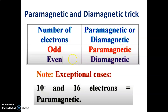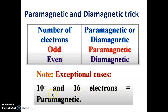So normally, even number of electrons is diamagnetic and odd number of electrons is paramagnetic — but there are exceptional cases. Species with 10 or 16 electrons are paramagnetic, even though those are even numbers. So the rule is: even = diamagnetic, odd = paramagnetic, except 10 and 16 electrons which are paramagnetic.